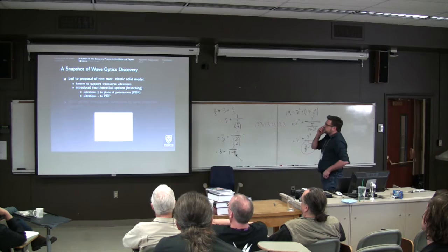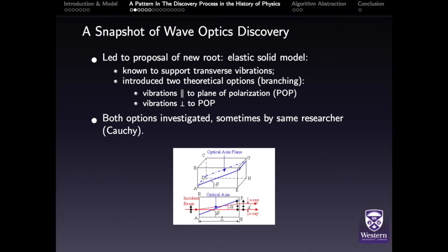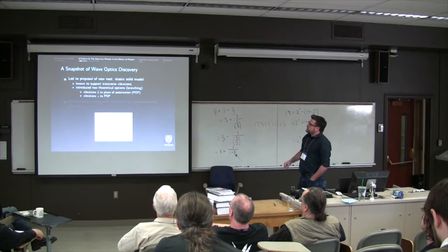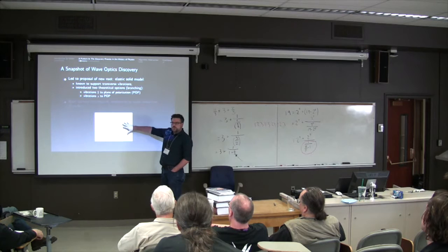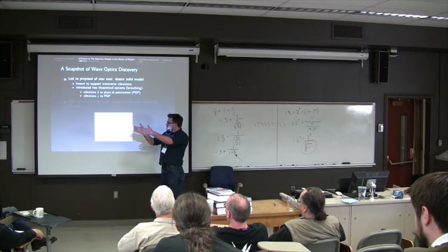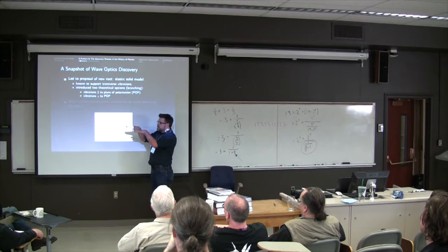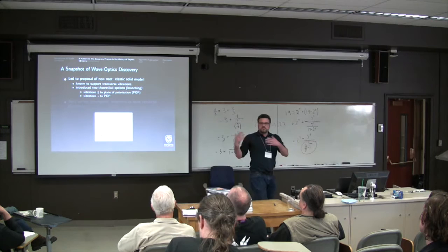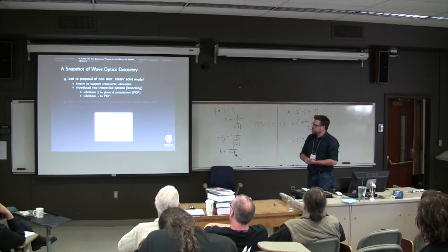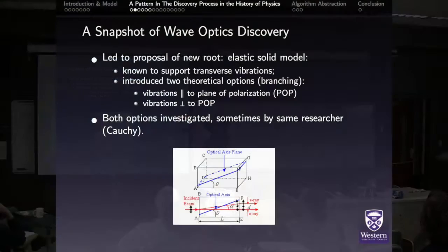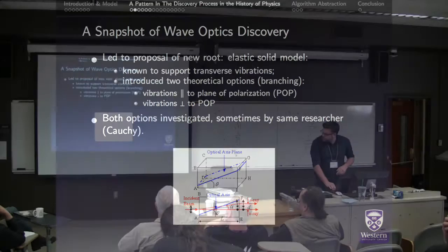So this led to a proposal for a new root, an elastic solid model, since elastic solids phenomenologically were known to support transverse vibrations. But it introduced two theoretical options. So this is in the context of double refraction, so birefringent crystals, which for most axes, an incident beam will get split into two polarized beams. But for a particular axis, there's only one beam. And when the plane of incidence maps up with that axis to define the plane, that plane was called the plane of polarization. So it had to be defined without the usual notion of polarization because we didn't know light was transverse at this time. The important thing for our purposes is it introduced two possibilities. So the vibrations transverse could be parallel to the plane of polarization or perpendicular to it. So that's the first branching.